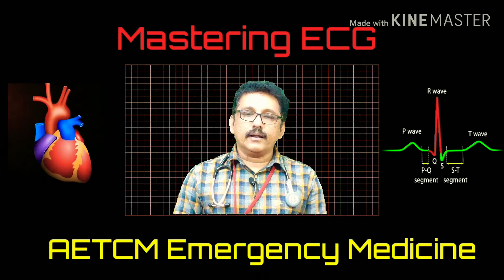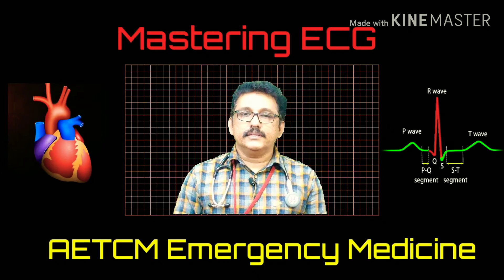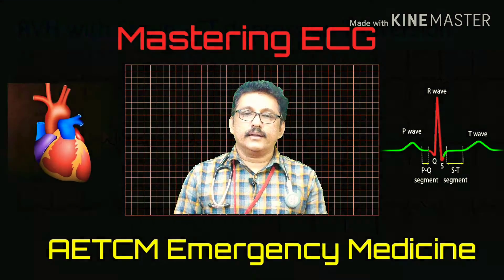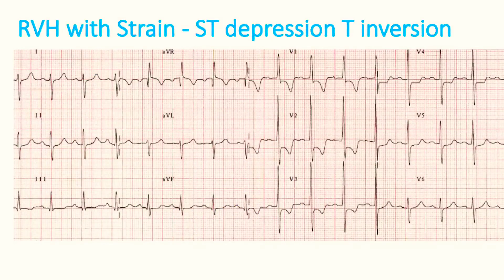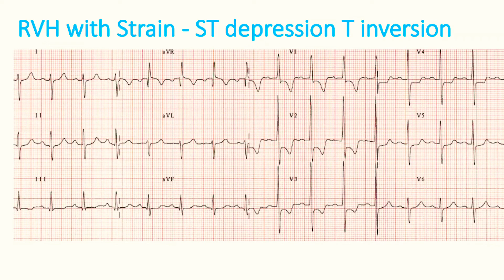Right ventricular hypertrophy, same as LVH — here also you can get ST depression and T-wave inversion. The limbs of the T-waves are asymmetrical: the descending and ascending limbs are asymmetrical. So asymmetrical T-wave limbs can be seen in both LVH and RVH.